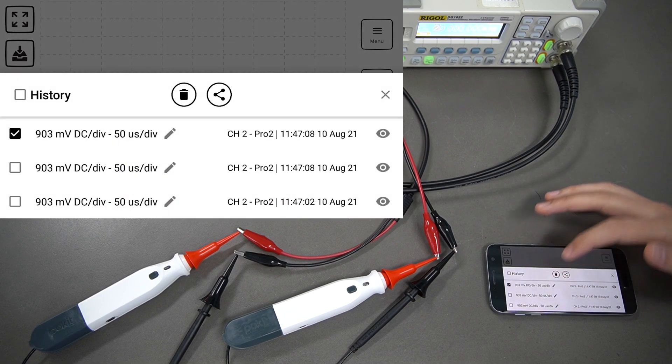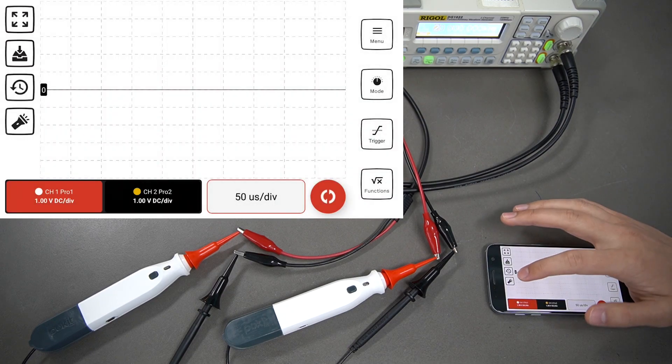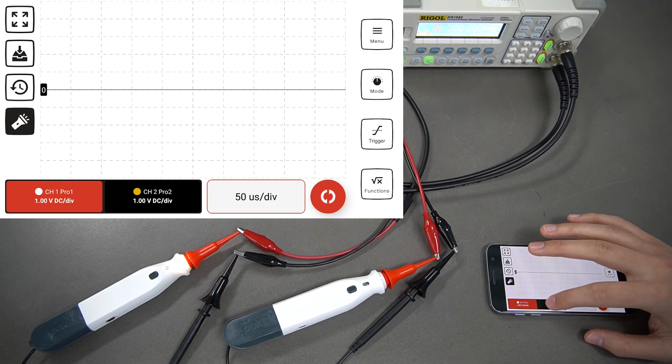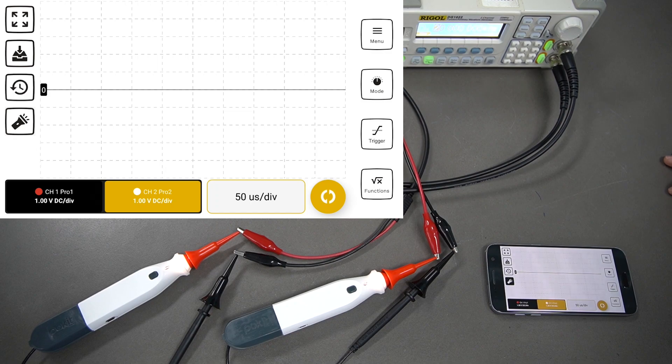You also got this torch button as well for Pocket Pro. That'll just turn on the torch for each unit. I'll go over to channel 2. You can turn that one on as well. And that's how to use Pocket Pro's oscilloscope function.